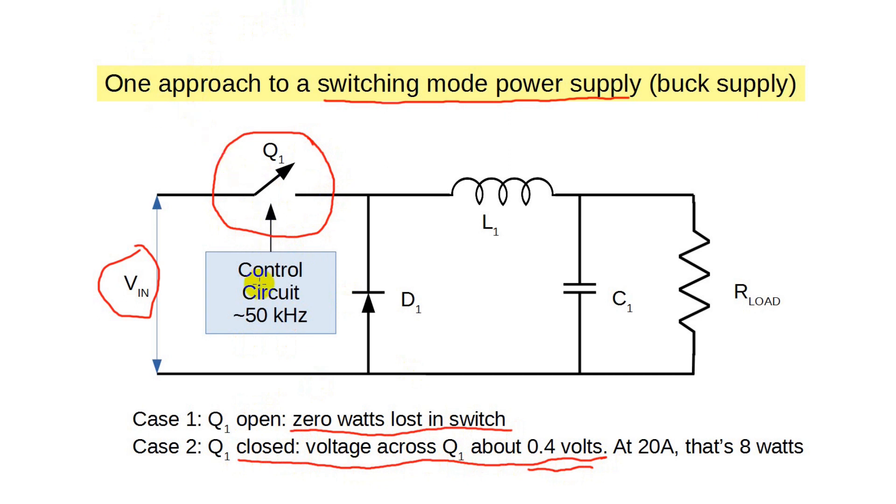It's either on or off. We don't use it in its linear range, where it dissipates lots of heat, but rather at the extreme ends of its range. Note that V in can be much higher than V out. In fact, it's often just rectified and filtered utility voltage. The control circuitry turns the transistor on and off at a very high rate, often around 50,000 times per second, or 50 kilohertz.